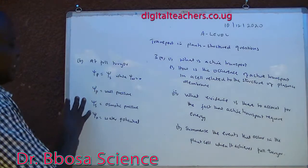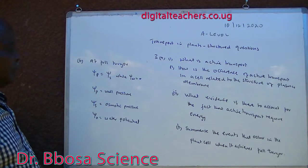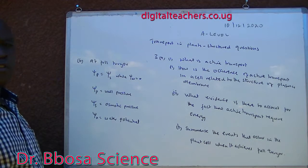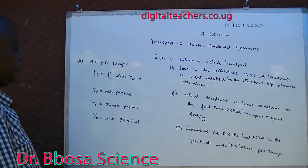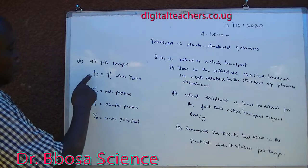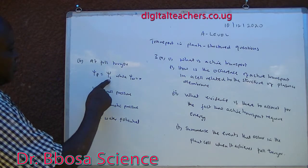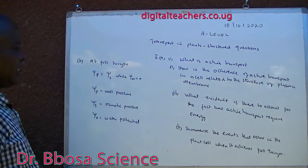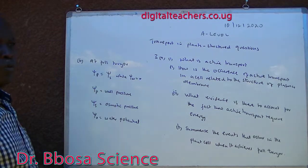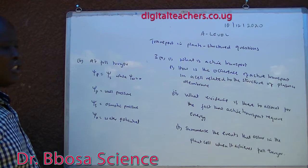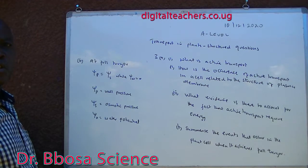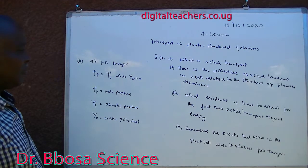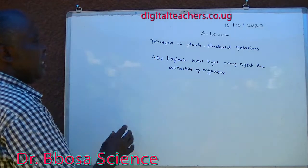Part B: at full turgor, water pressure is equal to osmotic pressure. Water potential is equal to zero.